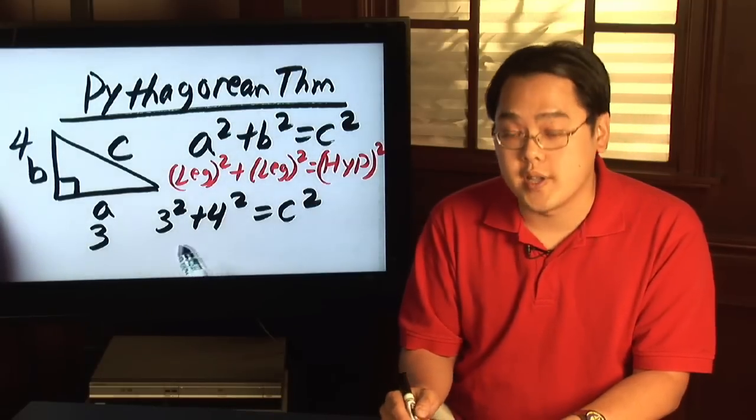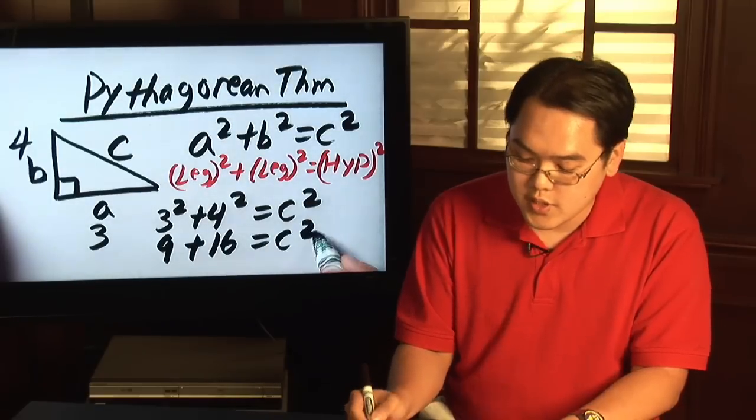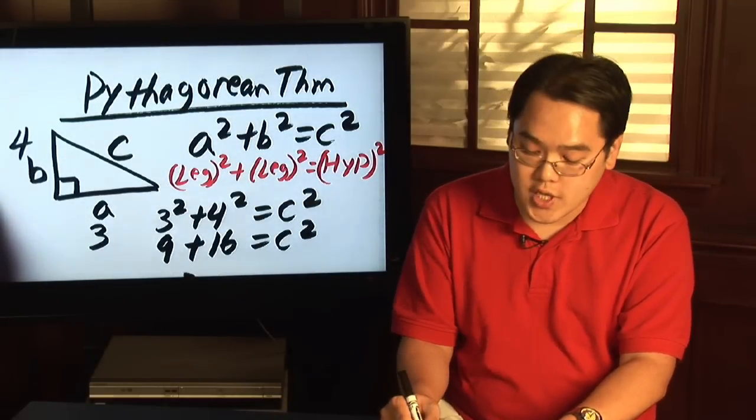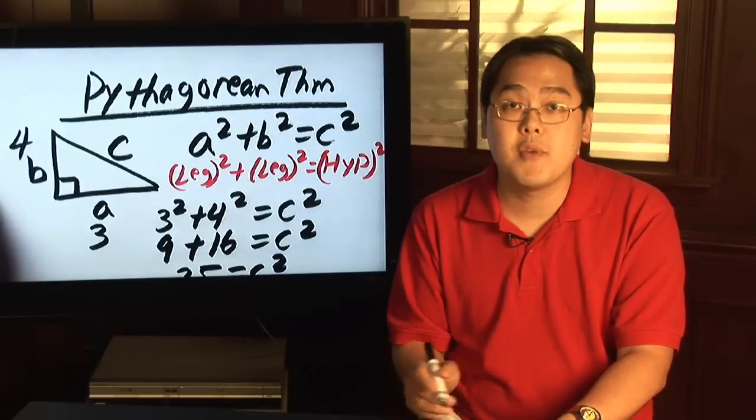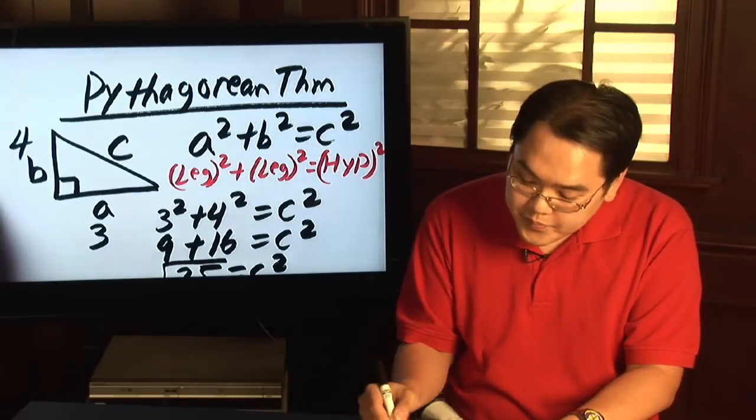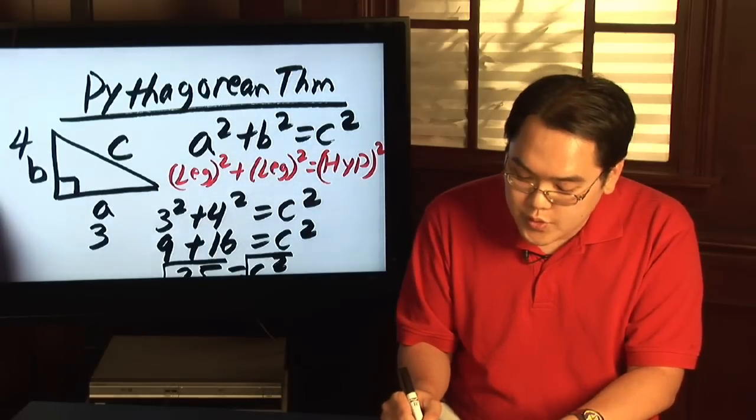3 squared is 9, plus 4 squared is 16, and that equals C squared. So 9 plus 16 gives you 25 equals C squared. To solve for C, all you need to do is use algebra to take the square root of both sides, and you'll get C equals 5.